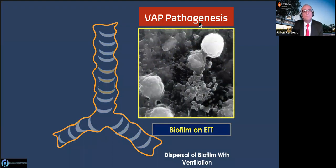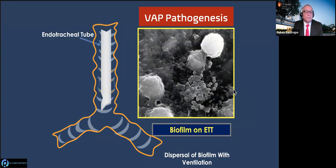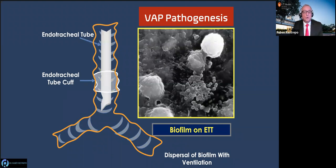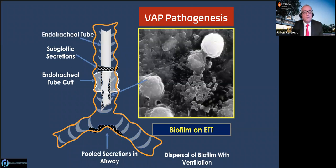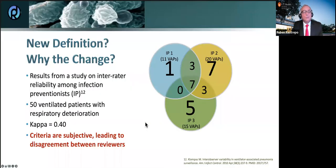Let's review the old VAP pathogenesis. Every single time you have the endotracheal tube, you impose risks. There's a significant role from the biofilm — that's why you have so many suction devices these days, to hopefully prevent VAP. With the cuff, you don't want it too tight against the mucosa, so subglottic secretions can trickle down — that's the reason for subglottic secretion suctioning. The dispersal biofilm is extremely important to this day.